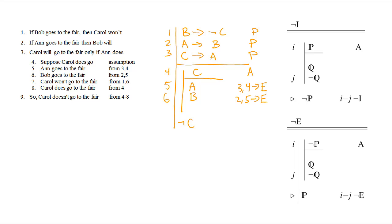And line 5 together with 2 and an arrow elimination will give us that Bob goes to the fair. Now that, line 6 together with line 1, and again another arrow elimination, gives us that Carol does not go to the fair. Now we've arrived at the goal sentence, but keep in mind we're still inside of a subderivation. We need to get not C out on the main scope line for it to count as having been derived from just the primary assumptions.